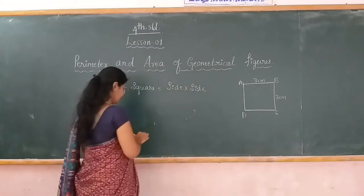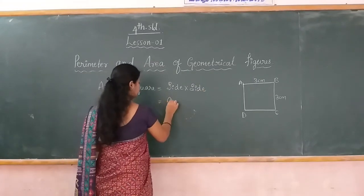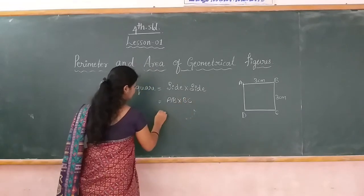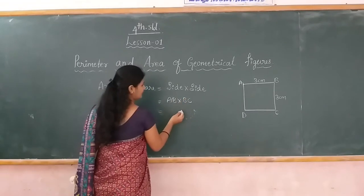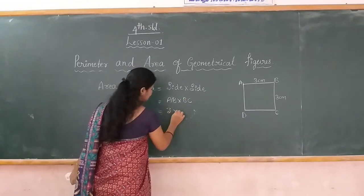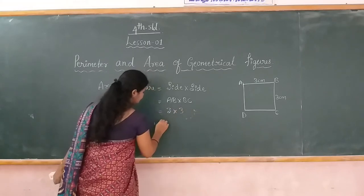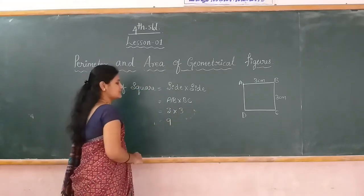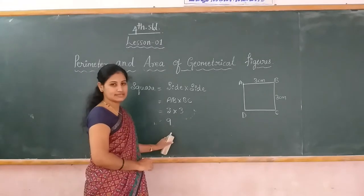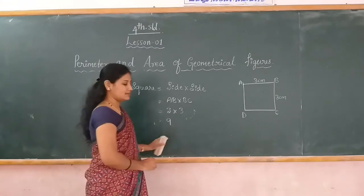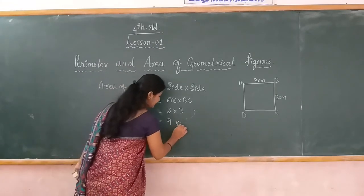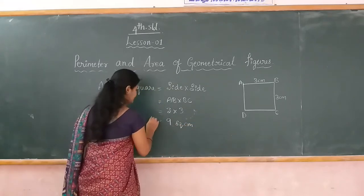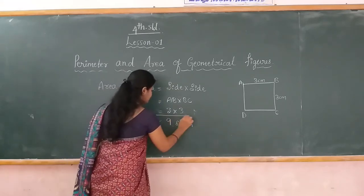You put the multiplication of side into side: AB into BC. Therefore, put the values: AB is equal to 3 cm and BC is equal to 3 cm. 3 times 3 is 9 — but it is not cm, because it is measured as square centimeters, because it is an area. This is the area of the given square.